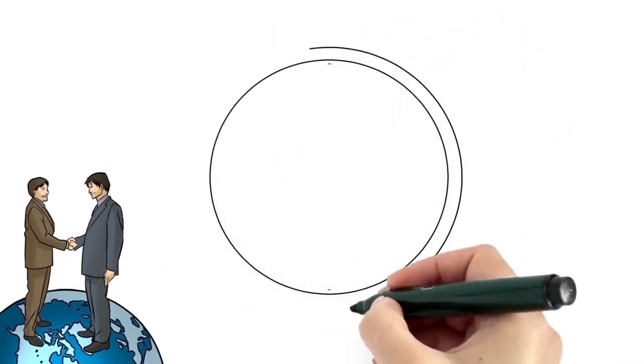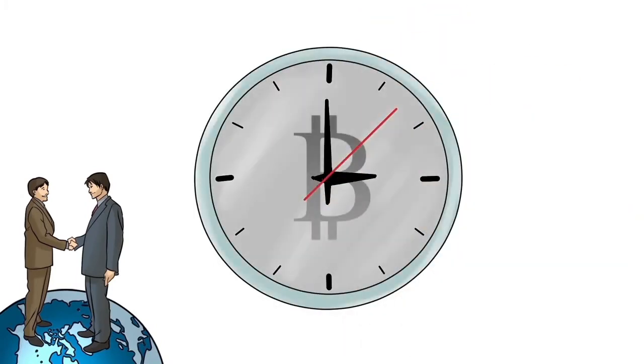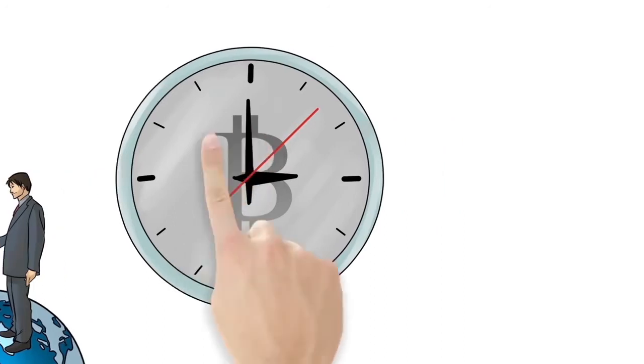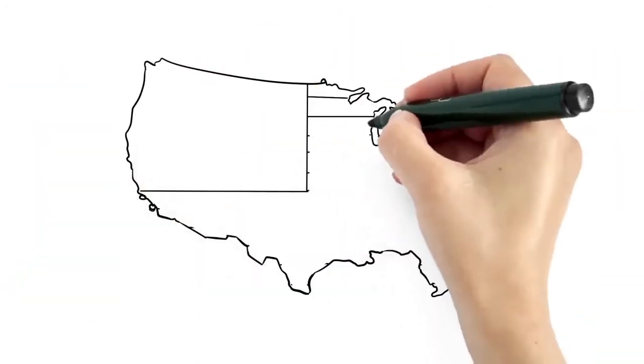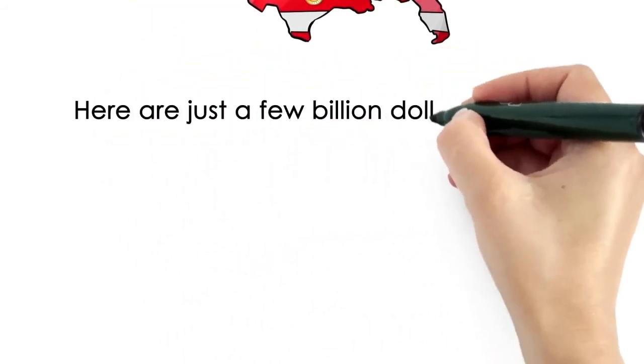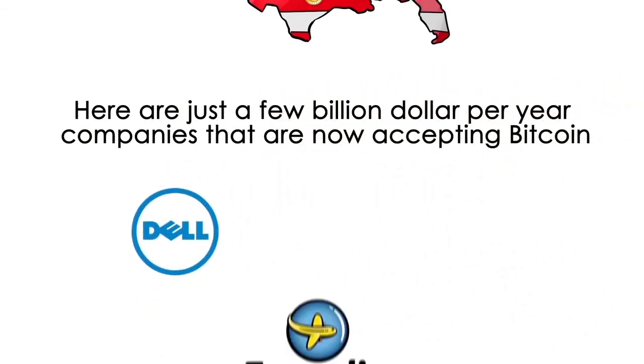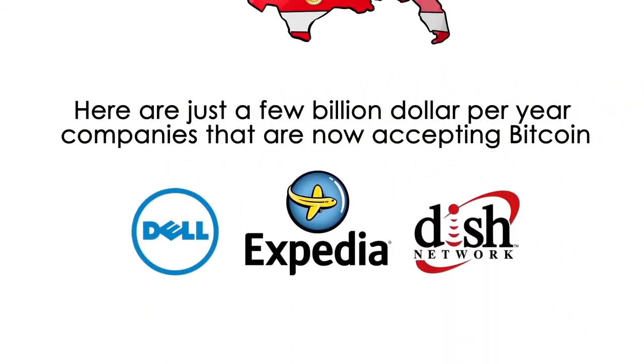At the speed this market is moving, it's only a matter of time before you are using it too, and probably a lot sooner than you think. There are already 100,000 businesses just in the US that accept Bitcoin and growing daily. Here are just a few billion dollar per year companies that are now accepting Bitcoin: Dell Computers, Expedia.com, Dish Network and others.